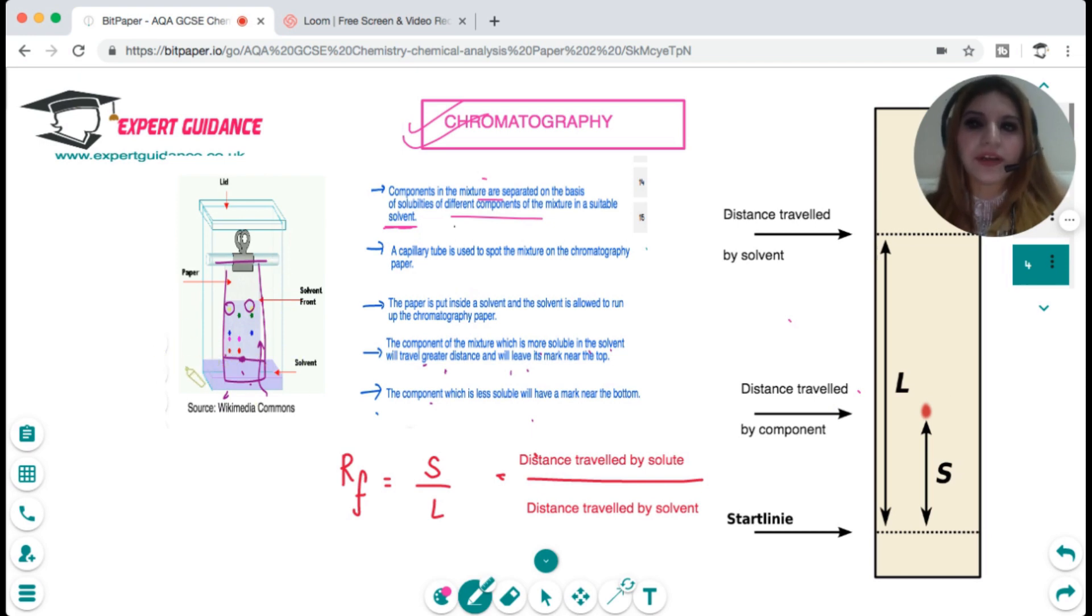How do we do this chromatography? You must have done it in school. You take a paper, mark a line with a pencil, and touch the substance you want to separate with a capillary tube. By capillary action the solvent travels up and as it travels up it dissolves the components and separates them on the basis of solubility.